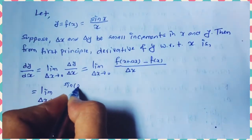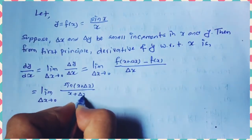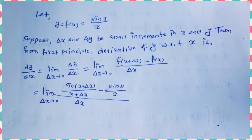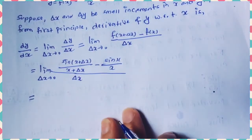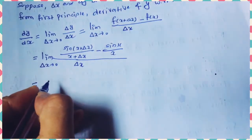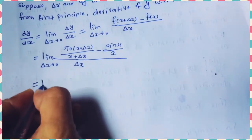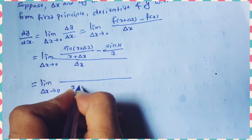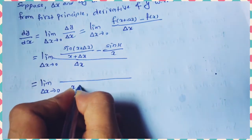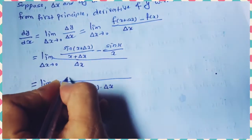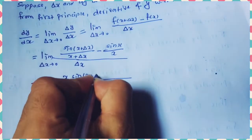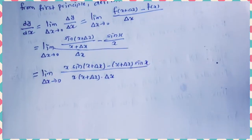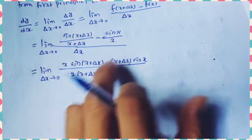We have to write f(x + δx) in terms of the given function, that is sin(x + δx) / (x + δx). So the expression becomes: lim(δx→0) of [sin(x + δx)/(x + δx) − sin(x)/x] whole divided by δx.